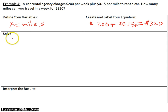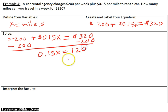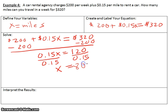Now we write this out to solve. We will have $200 plus 15 cents a mile, which is 0.15 times X, equals $320. So now we solve. We will subtract 200 on both sides and we will be left with 0.15X equals 120. Now we divide each side by 0.15 and we're left with X equals 800, because 120 divided by 0.15 is 800.